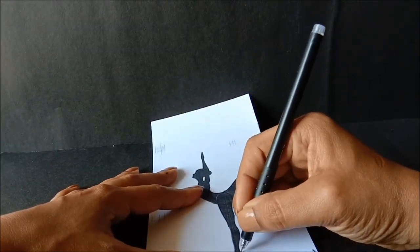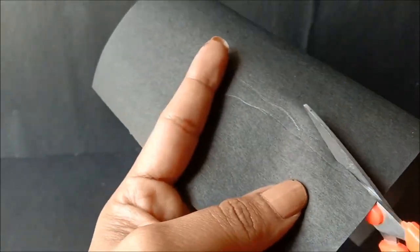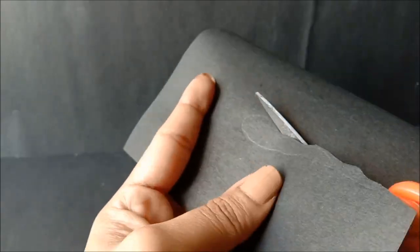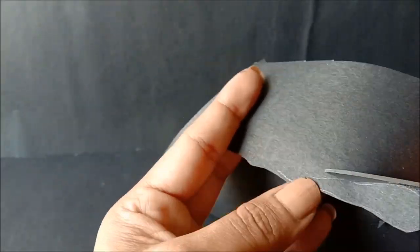Then trace it on a black chart paper and cut along. Don't forget to stick it on a double sided tape first before you cut them all.